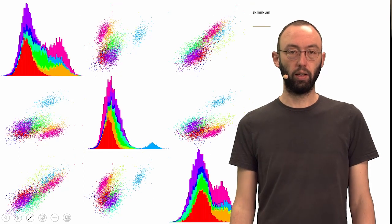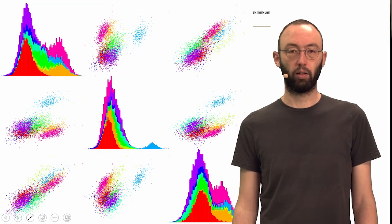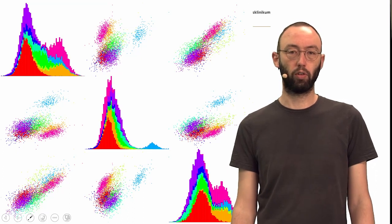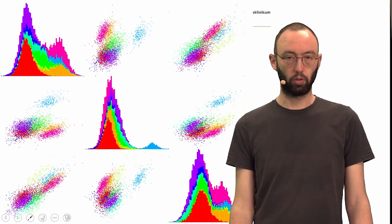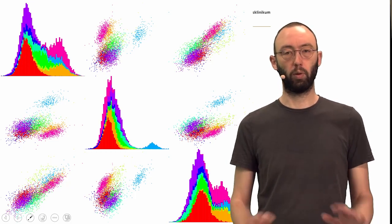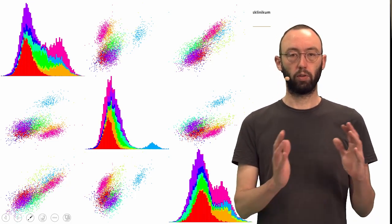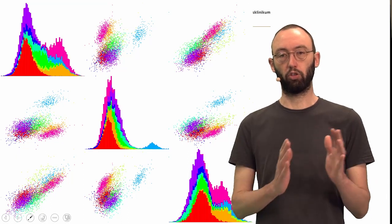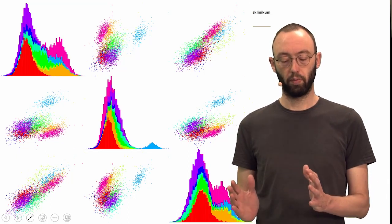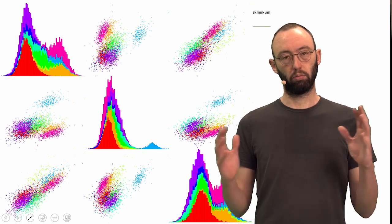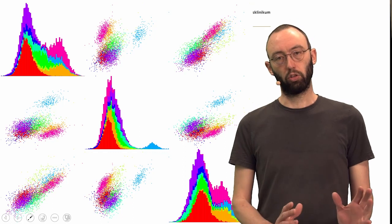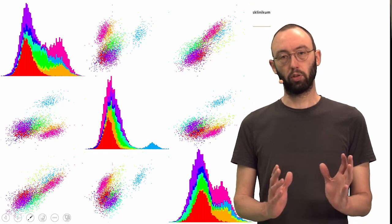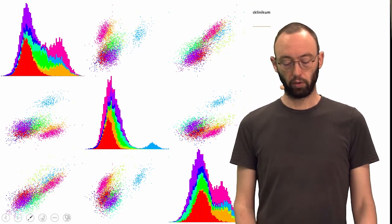We can do that by looking again at the two-dimensional projections, the two-dimensional marginals of the high-dimensional data. Remember, the clustering we did in a 12-dimensional space with three principal components extracted from each of the channels in parallel. Here we only look at a subset of these features.